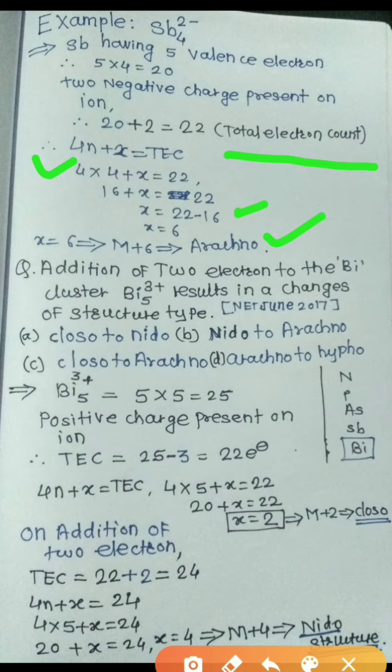Now let's look at a previous exam question: the addition of two electrons to the bismuth cluster Bi₅³⁺ results in a change of structure type. This question was asked in the CSIR-NET June 2017 exam. The options are: (a) closo to nido, (b) nido to arachno, (c) closo to arachno, and (d) arachno to hypho.